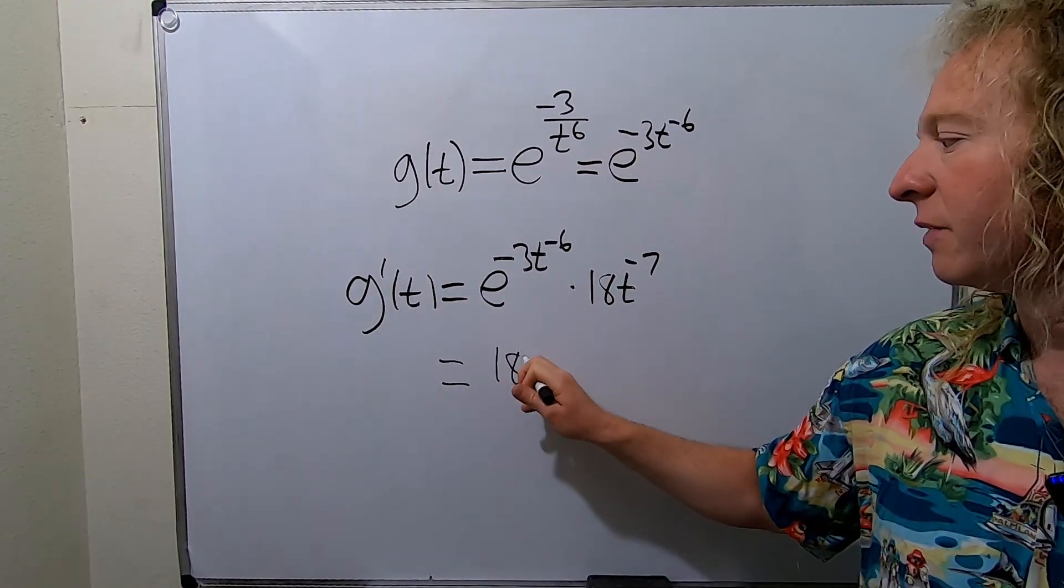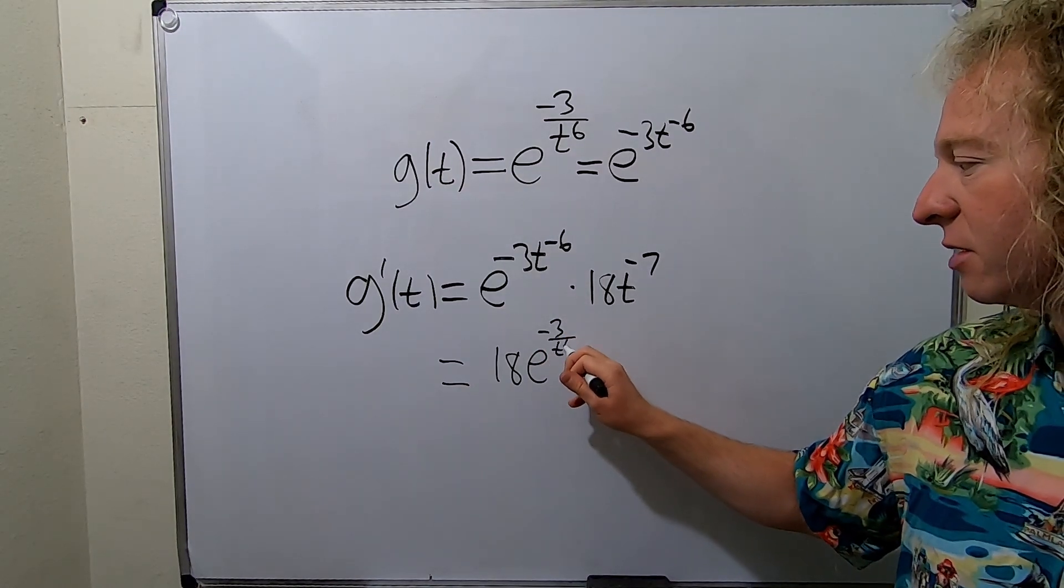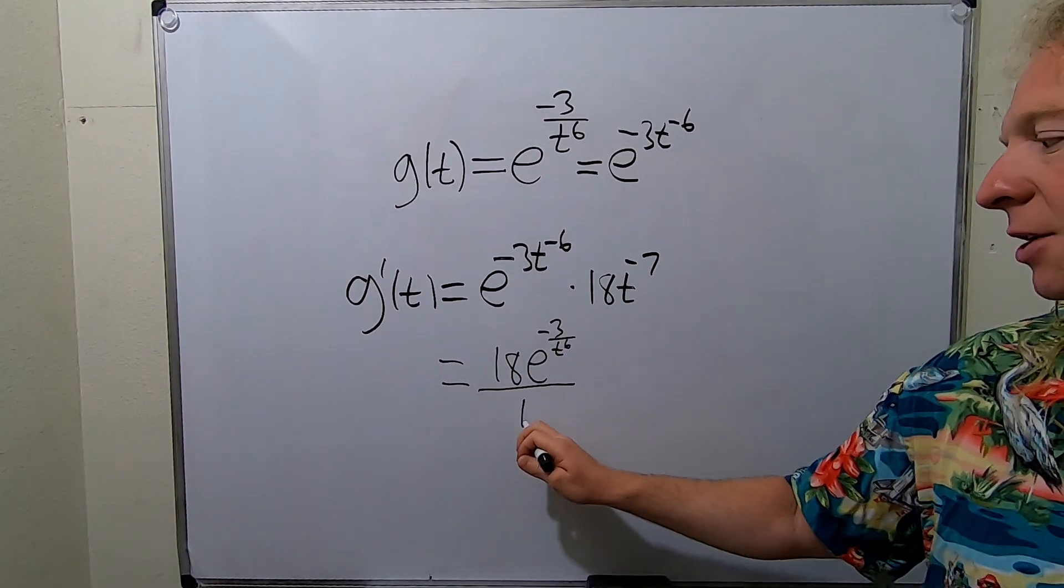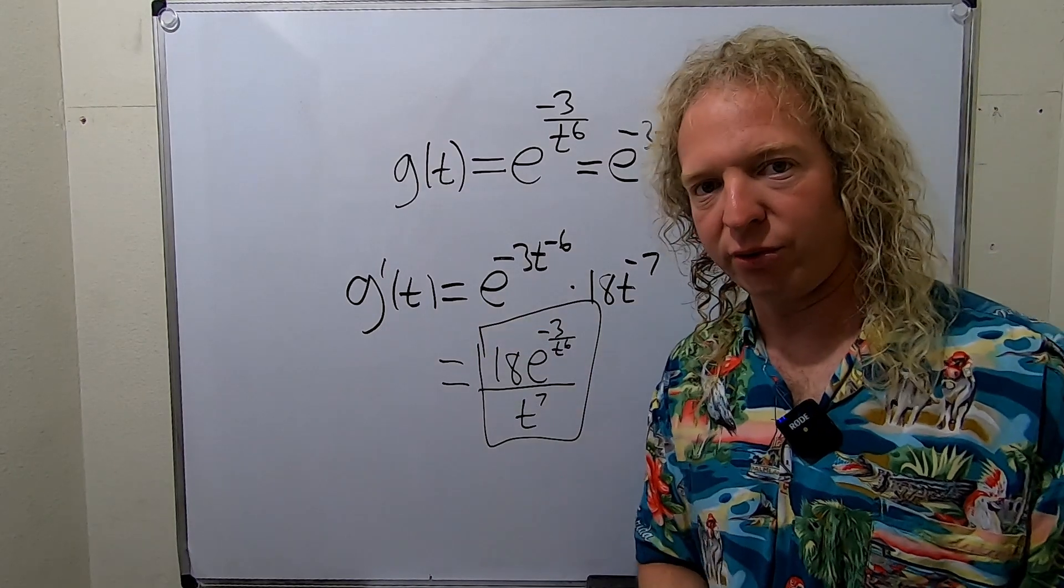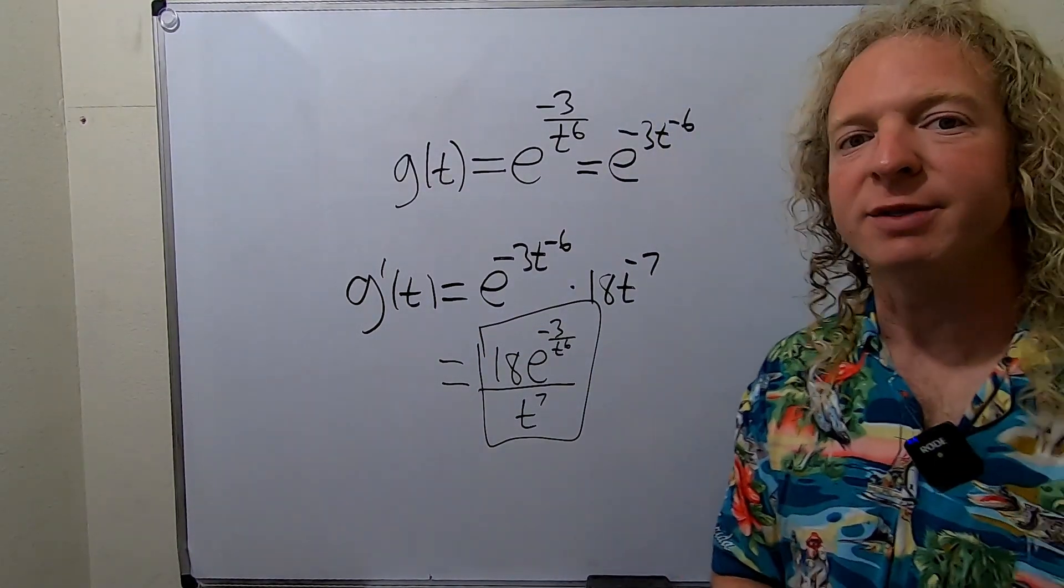Let's fix this to negative 3 over t to the 6, just make it look a little bit better, and then just bring this down, t to the 7. That would be a pretty nice way to write the final answer to this problem. I hope this video has been helpful, take care.